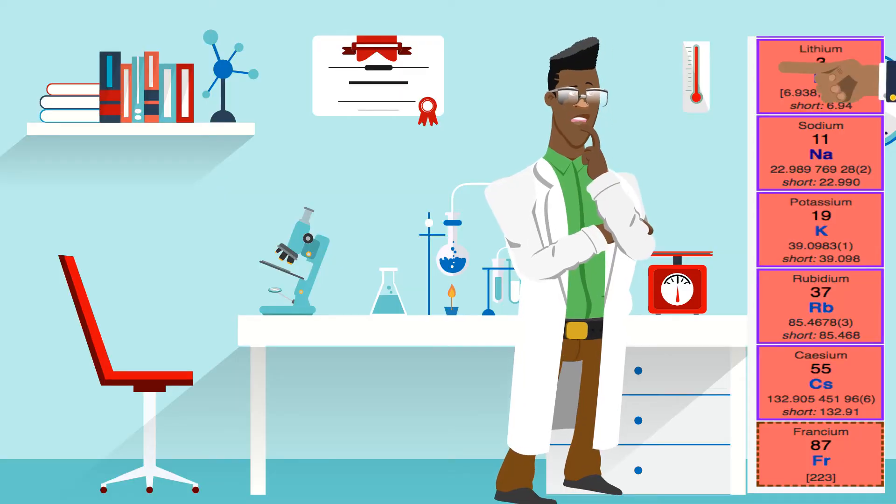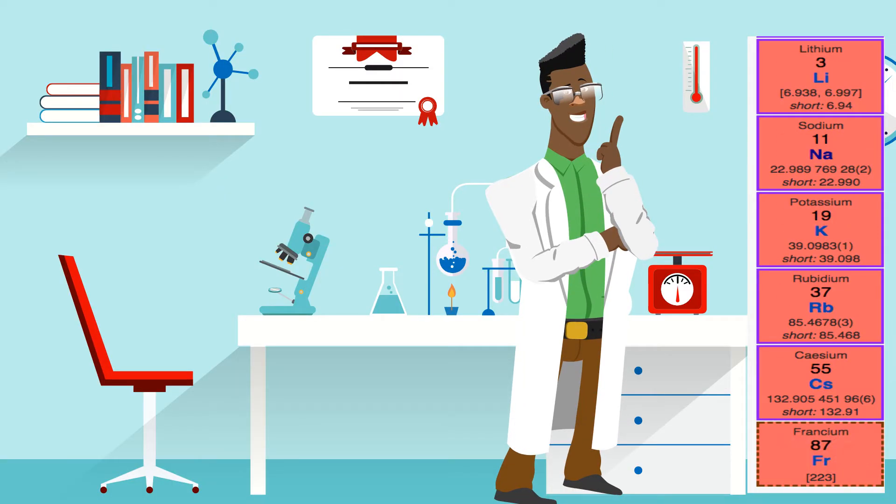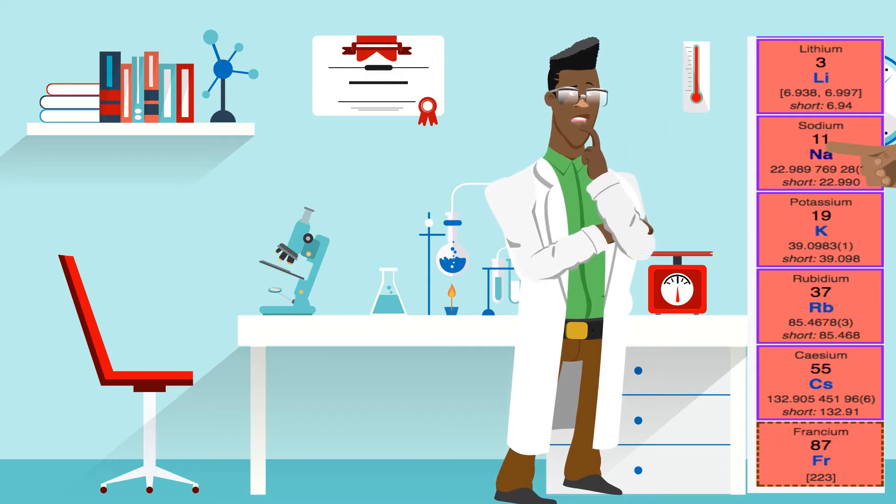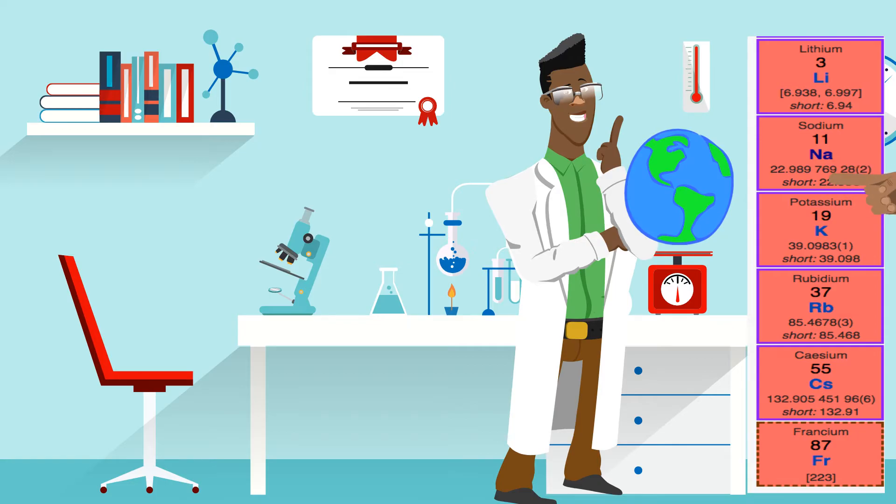As you move down the column, they become much more reactive. Sodium and potassium are very abundant in the earth's crust.